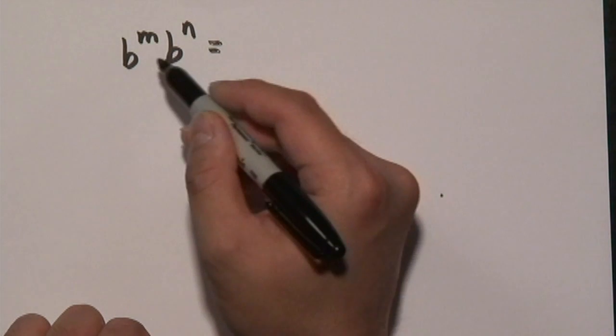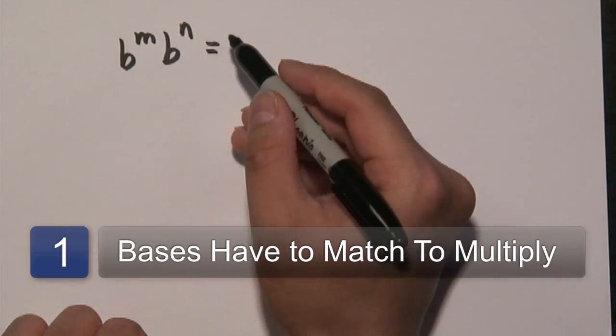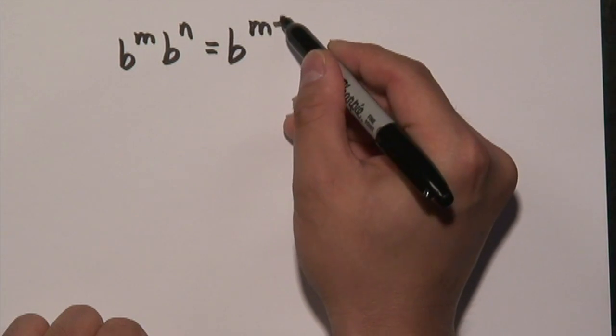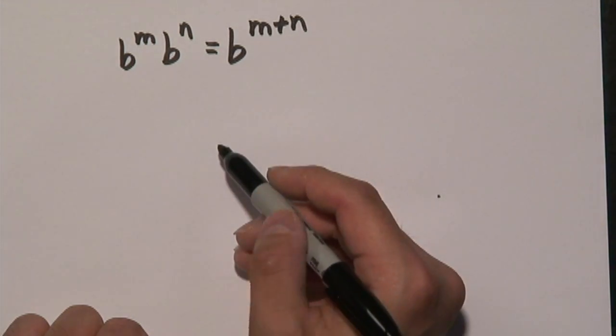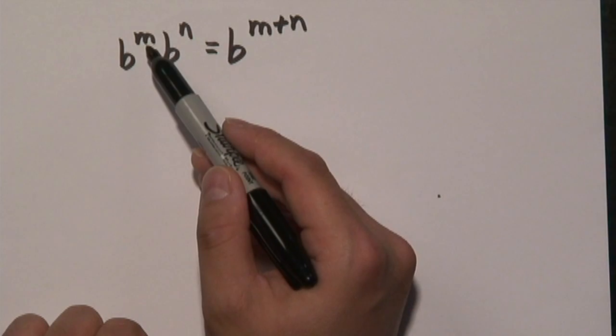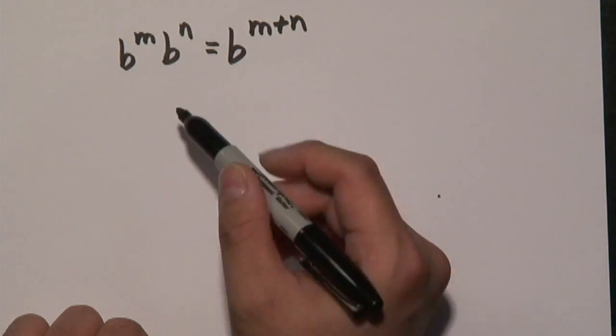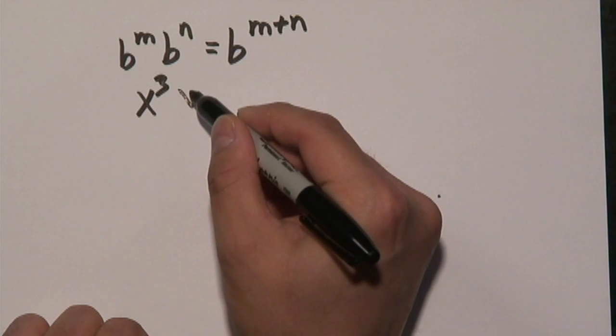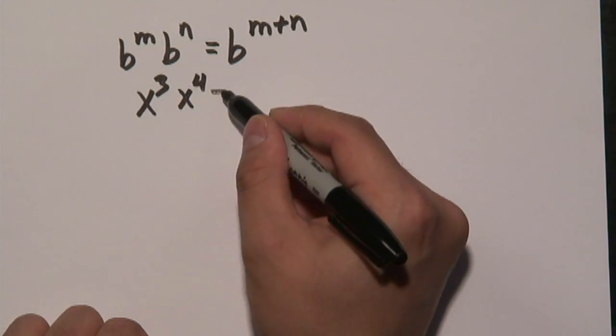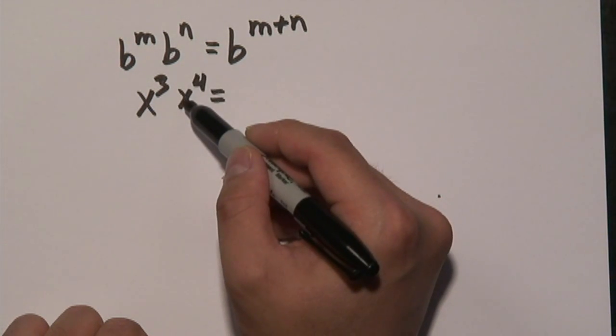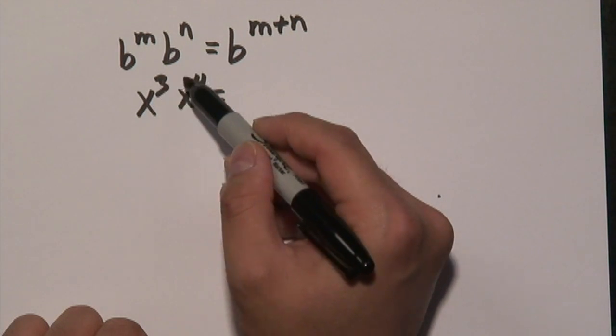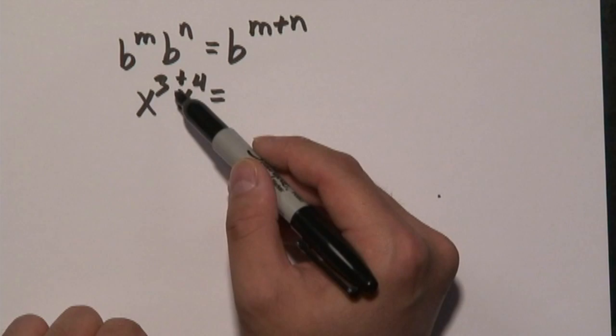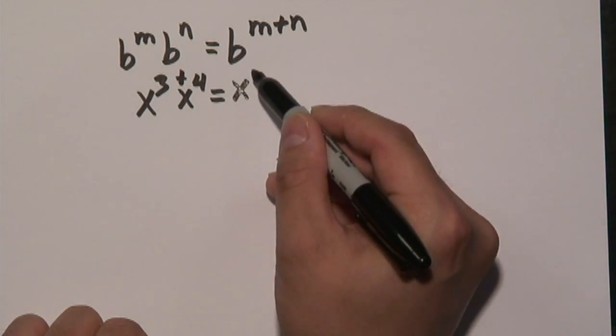This particular rule is when you have b to the m times b to the n, you can consolidate by having one base and adding the two exponents. But again I'm emphasizing that the bases have to match. So for example if you have x to the third times x to the fourth, you make sure that the x's, the bases match and then with the exponents you literally just add them. So x to the third times x to the fourth would be x to the seventh.